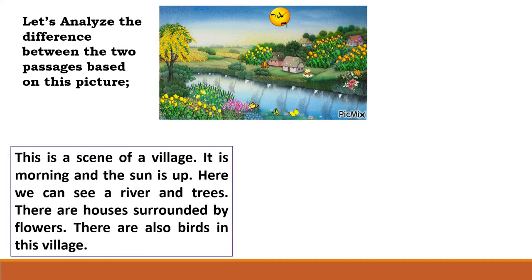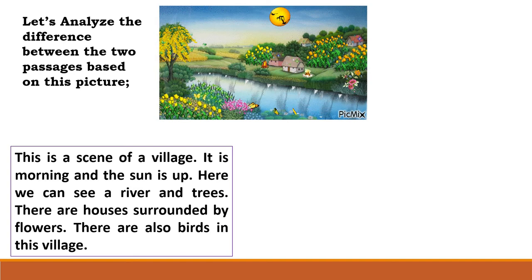Now I shall read the first one. This is a scene of a village. It is morning and the sun is up. Here we can see a river and trees. There are houses surrounded by flowers. There are also birds in this village.